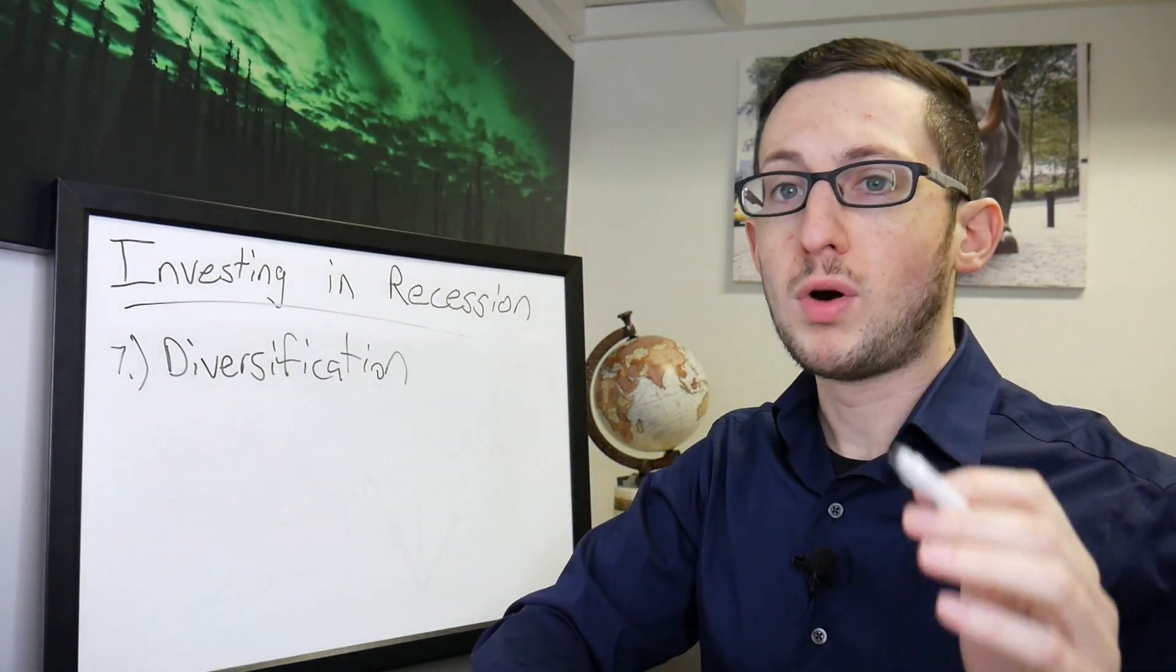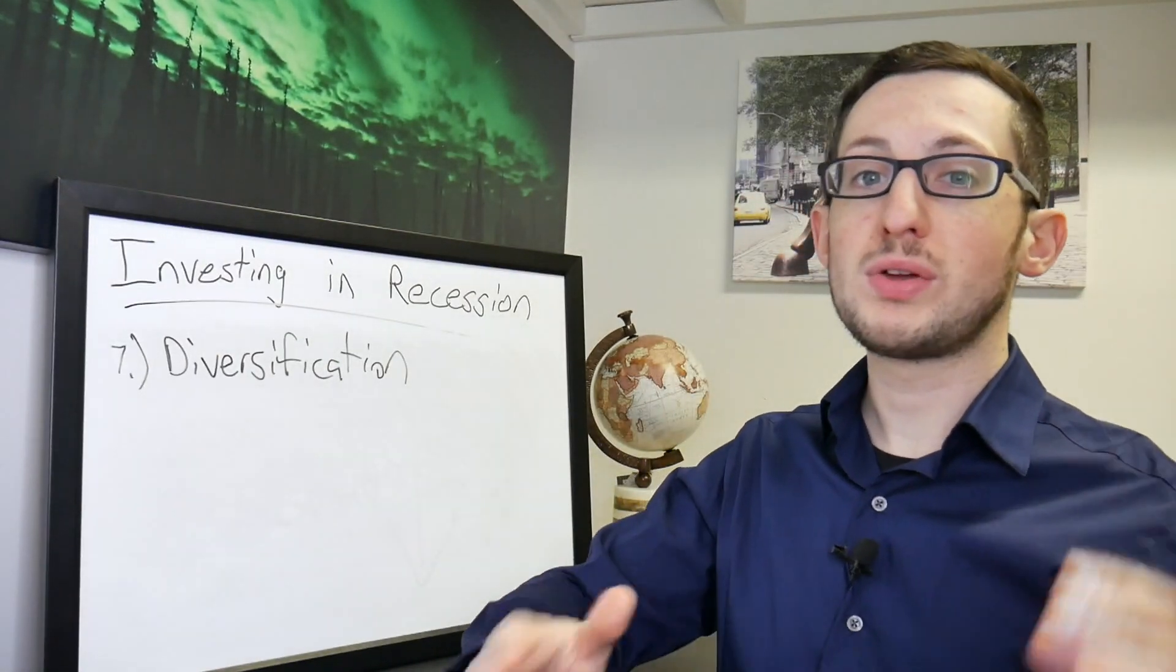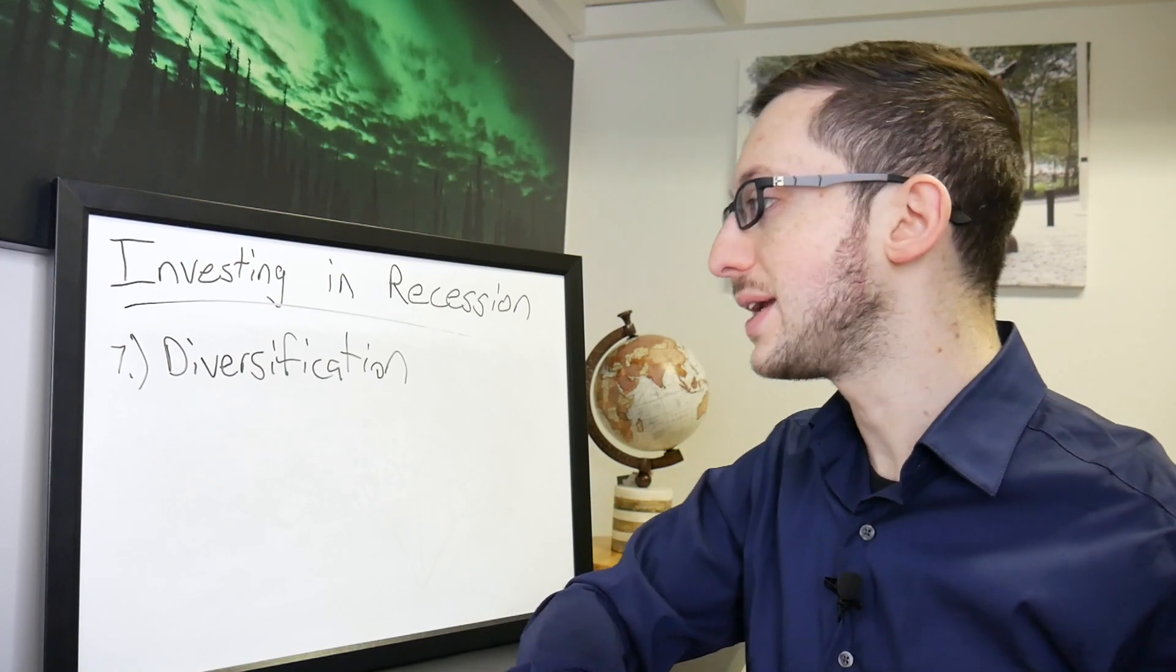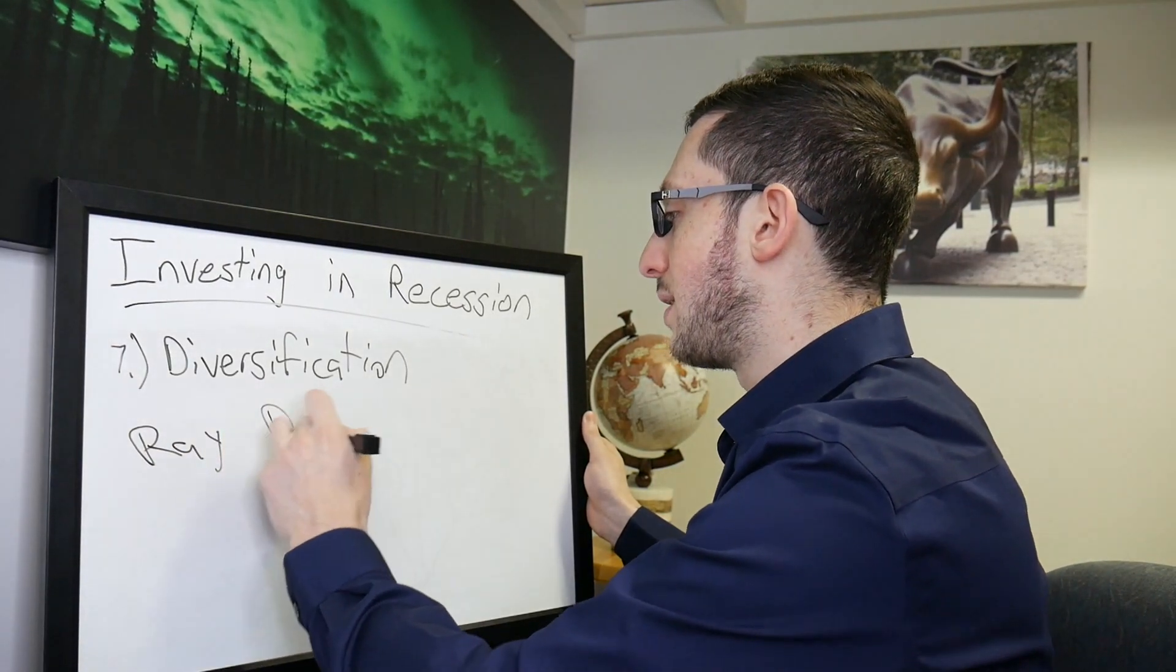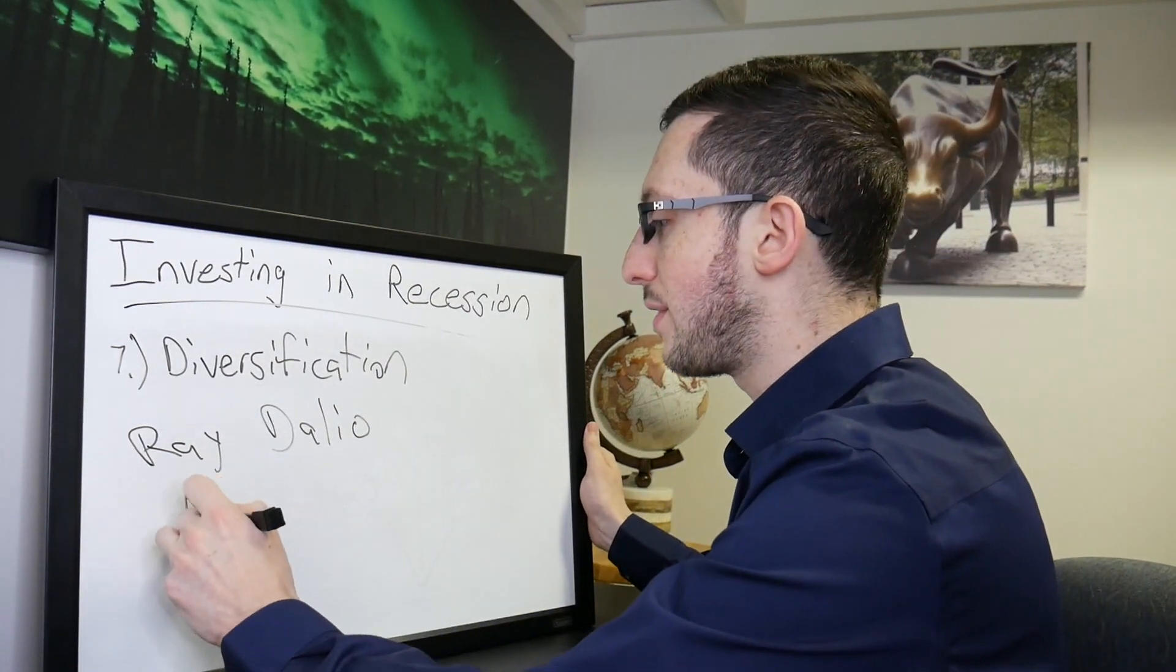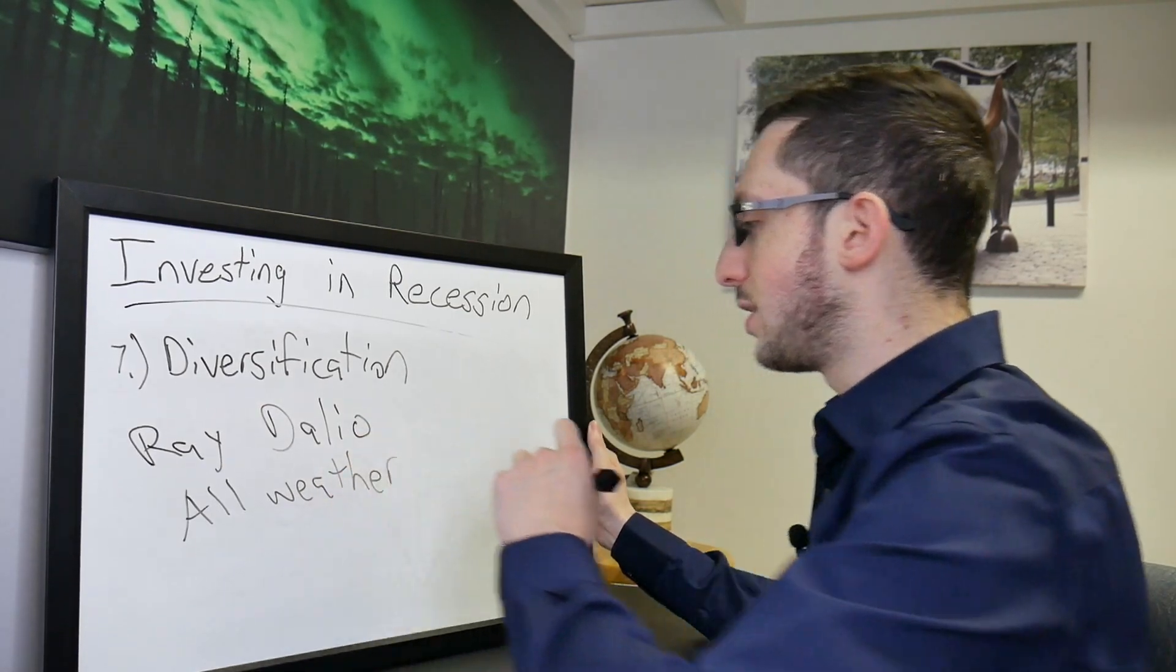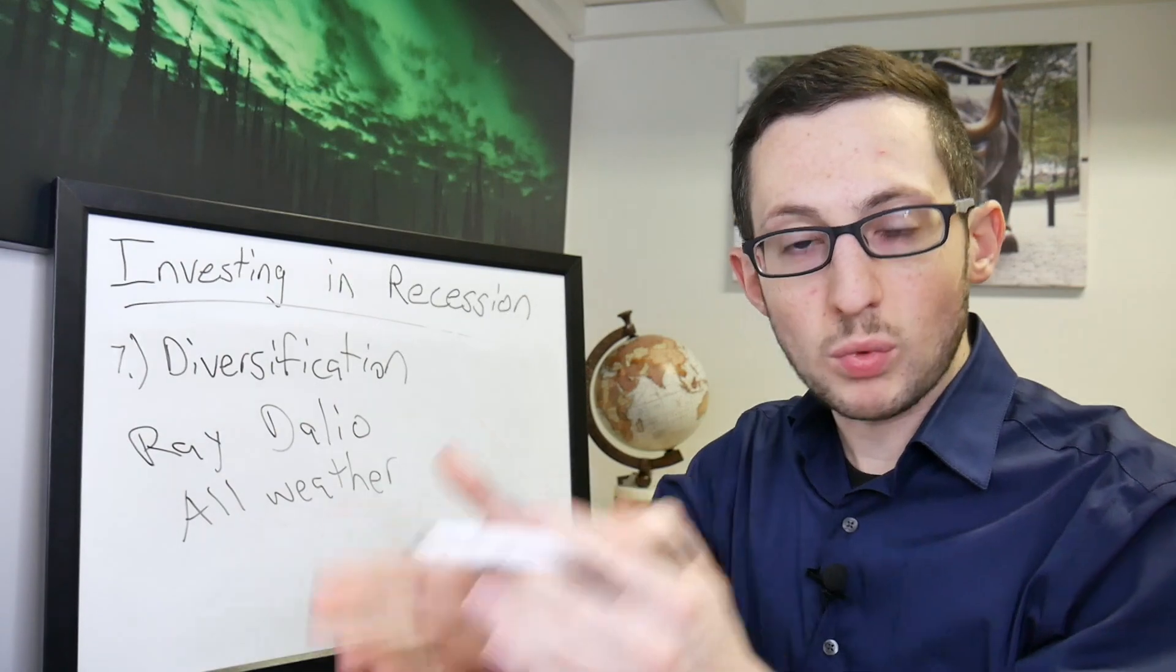So number seven, I think one of if not the most important thing that we really have to talk about, we've kind of been talking about it since the beginning, but is diversification. The main person that I learned a lot from is Ray Dalio. You should really look into him, hedge fund manager, and he has his all weather portfolio.